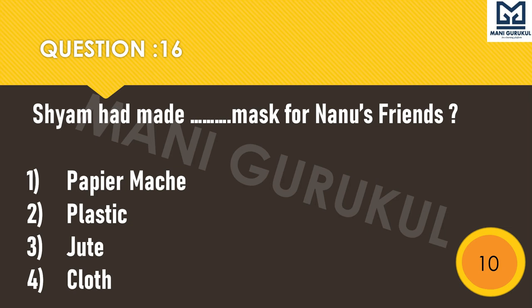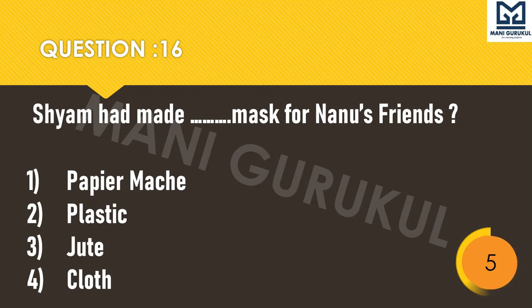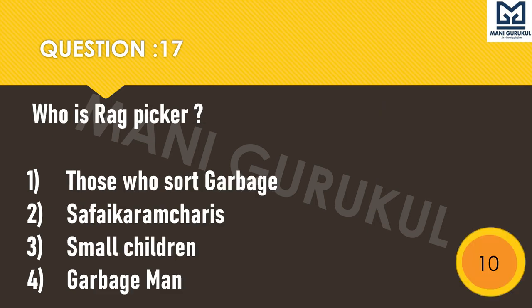Question 16: Shyam had made a dash mask for Nano's friend. First: papier-mâché. Second: plastic. Third: jute. Fourth: cloth. Shyam had made a dash mask for Nano's friend — what type of mask did Shyam make? Time's up.